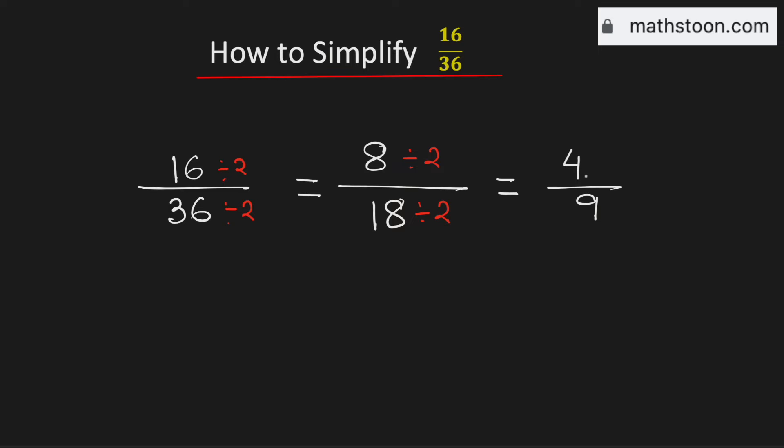As there are no common divisors of 4 and 9 other than 1 we cannot simplify it further. Therefore 4 by 9 is the simplified reduced form of the fraction 16 over 36 and this is our final answer.